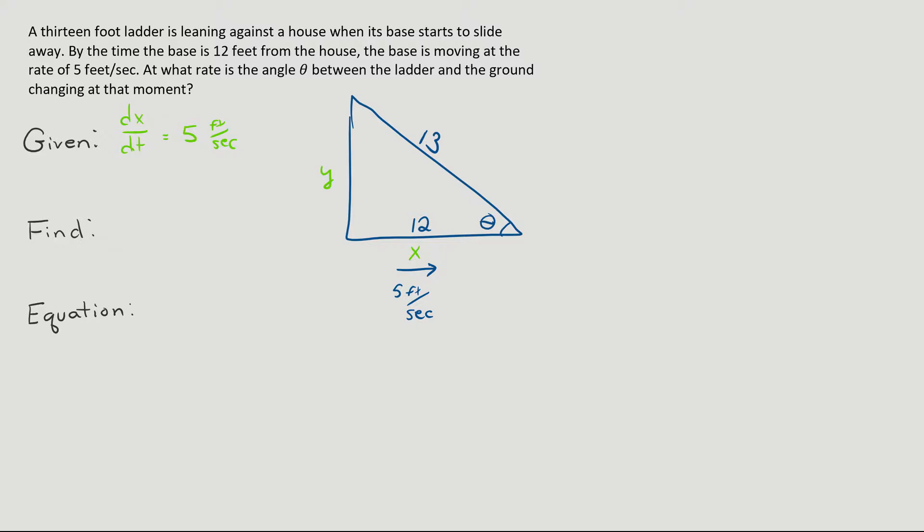And what are we trying to find? I'm trying to find how this angle right here is changing, because you can notice as the ladder slides away, that angle is going to get smaller and smaller. And with good notation, I want to know how theta changes over time: dθ/dt equals, and at what specific moment are we trying to figure that out? When x equals 12, when the base of the ladder is 12 feet away from the house.